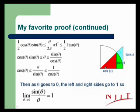So the left and the right become 1, and so theta over sine theta is squozen and must go to 1 as theta goes to 0. And therefore, its reciprocal must go to 1 over 1, or also 1. Therefore, the limit as theta goes to 0 of sine theta over theta is equal to 1.